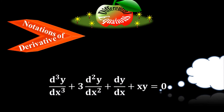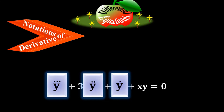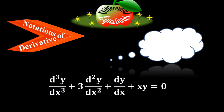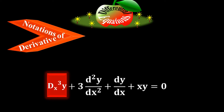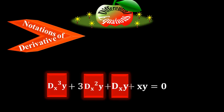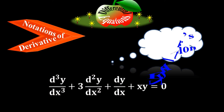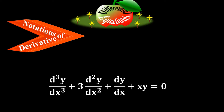Y-triple-prime, y-double-prime, and y-prime are called Lagrange's notations. Y-triple-dot, y-double-dot, and y-dot are called Newton's notations. And d-sub-x-cubed times y, d-sub-x-squared times y, and d-sub-x times y are called Euler's notations.